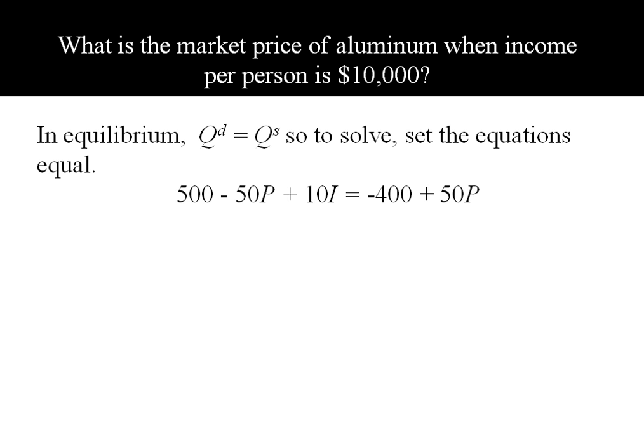500 - 50P + 10I = -400 + 50P. Before I go ahead and finish solving, I'm going to substitute in I = 10. Since income is given in thousands of dollars, I'll drop the three zeros and just plug in 10 instead of 10,000.